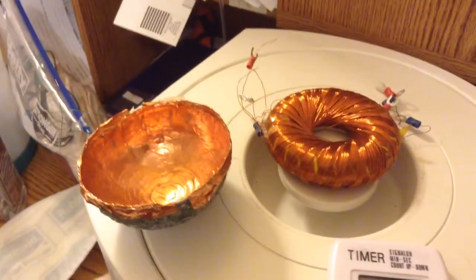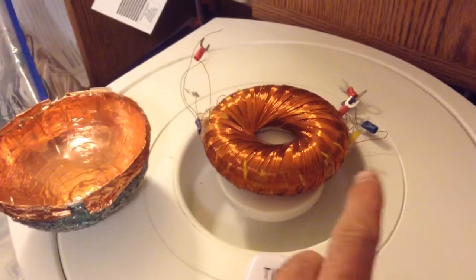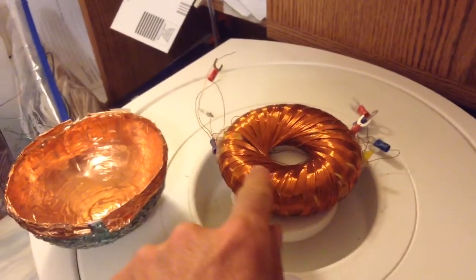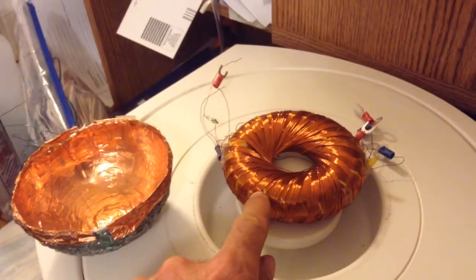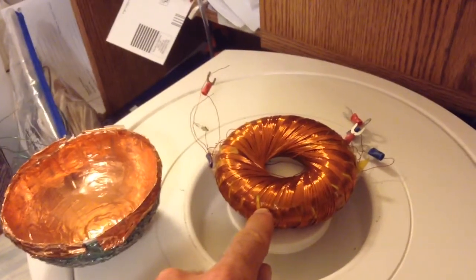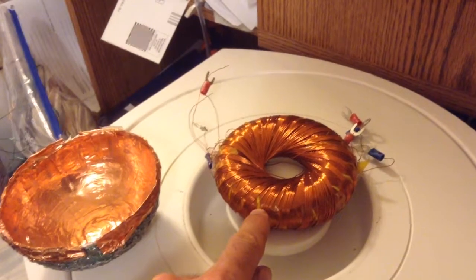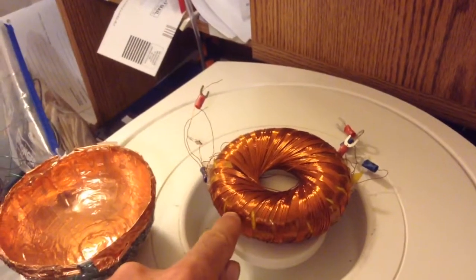One thing about these Rodin coils I did early on was that I did a normal winding on the inside of these Rodin coils. Each torus has 300 windings of about 24 gauge copper wire, magnet wire on the inside and you can't see that.